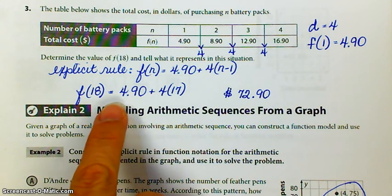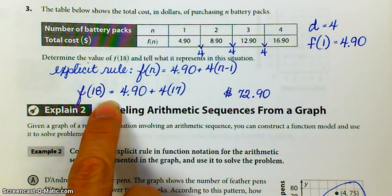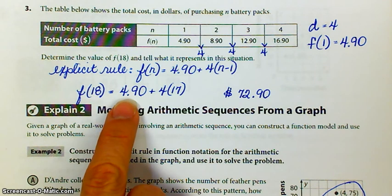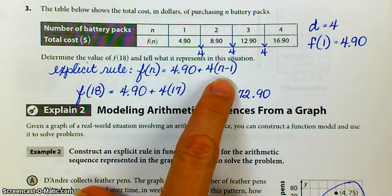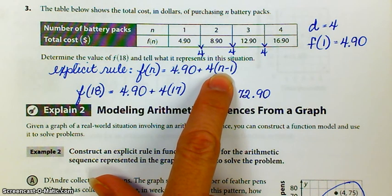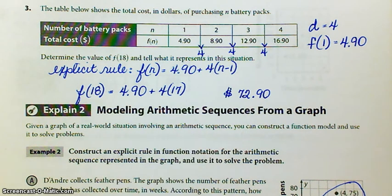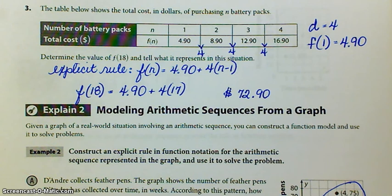And then I'm going to take that explicit rule and substitute in 18. So 4.90 plus 4 times 17. Why 17? Because remember it's n minus 1, so 18 minus 1. And when I do all of that, I get $72.90.